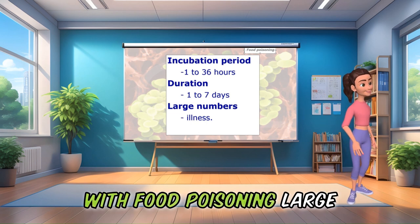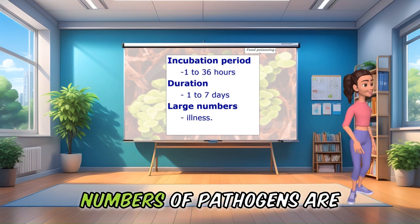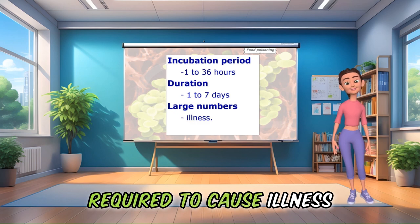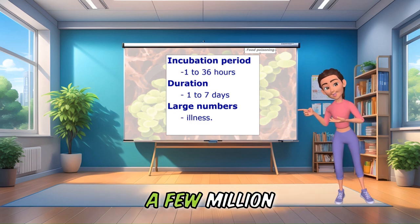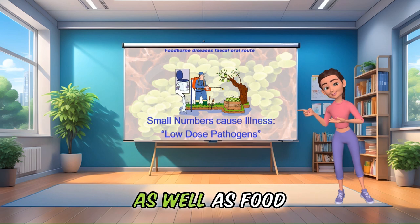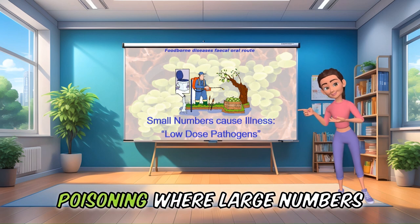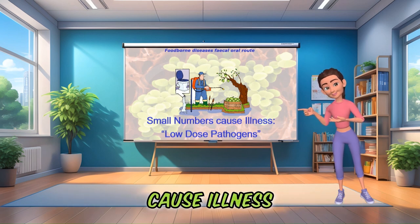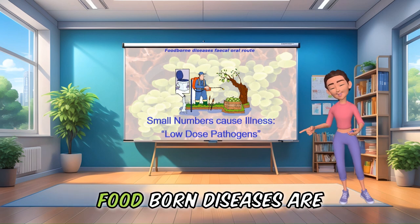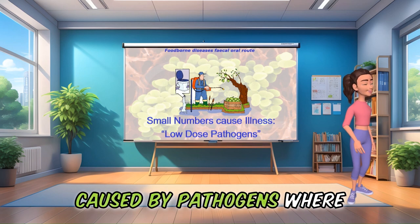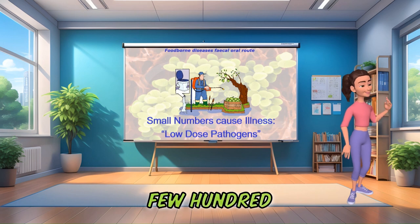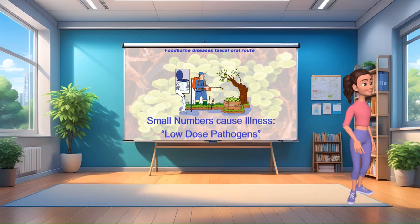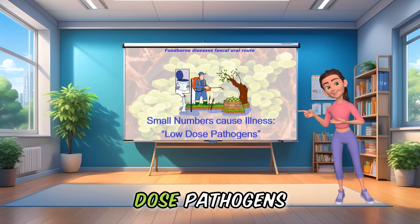With food poisoning, large numbers of pathogens are required to cause illness — hundreds of thousands or a few million. Foodborne diseases, by contrast, are caused by pathogens where small numbers can cause illness, for example just a handful to a few hundred. These are termed low-dose pathogens.